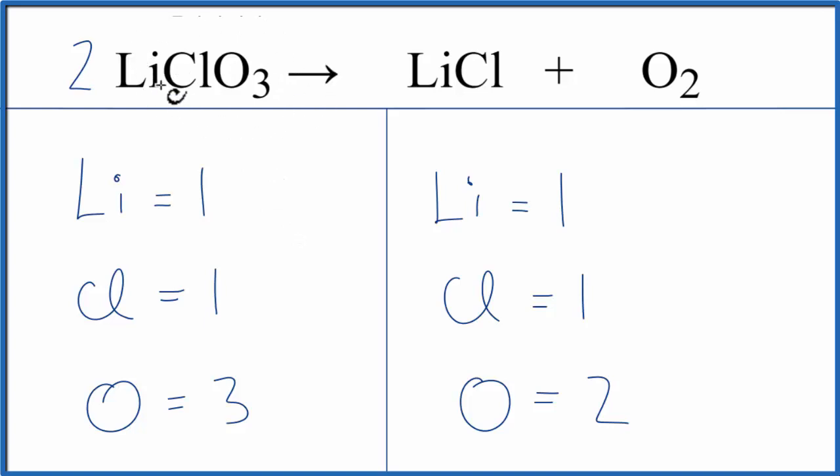The two applies to everything. We have one times two, that equals two. Chlorine's one times two, that equals two. And oxygen's three times two, that equals six.